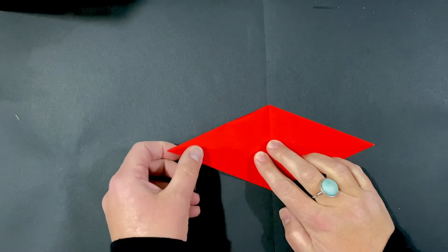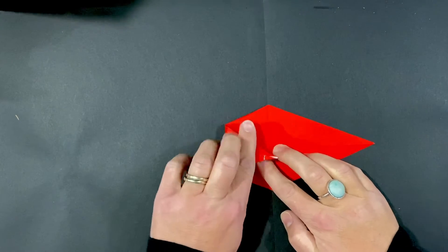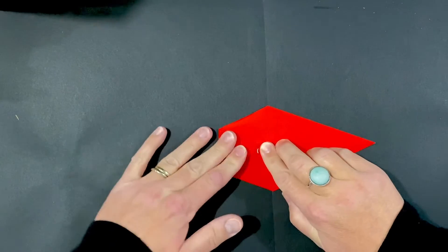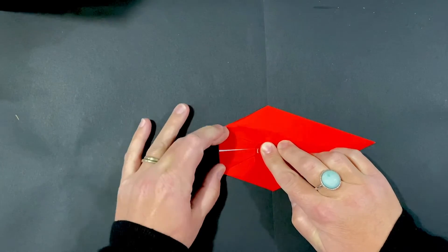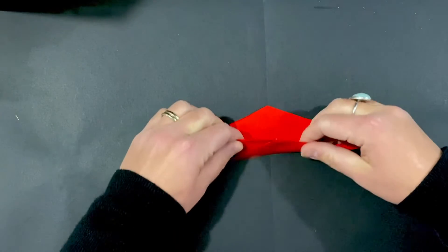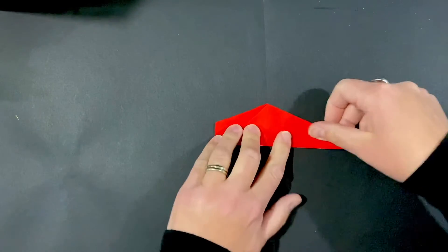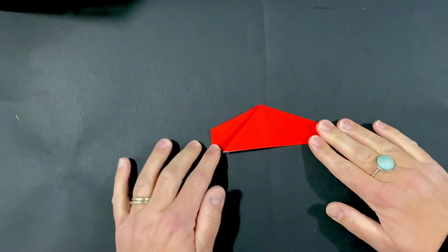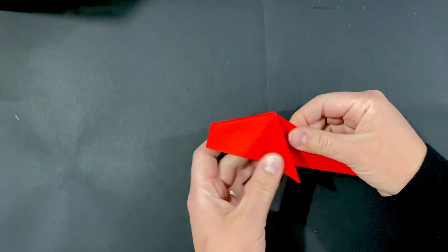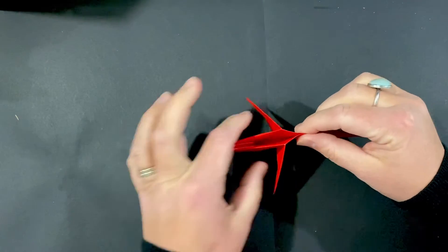Next, we are going to fold in this left corner so that it meets the central crease here. We're going to crease that and then fold it back up. You'll notice that you're starting to see the whale shape. We've got the fins of the whale and the head right there.